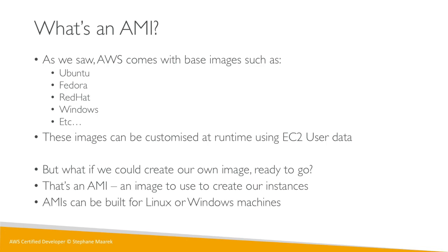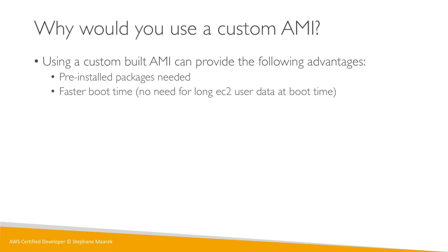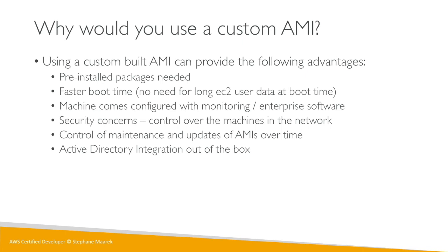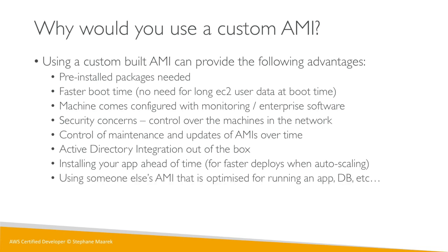A custom AMI is an image used to create your instances, and you can build them for Linux or Windows machines. Use cases include: pre-installing packages, faster boot time (no long EC2 user data scripts at boot), pre-configured monitoring or enterprise software, security controls over who can SSH into machines, maintenance and update control, Active Directory integration, pre-installing your application for faster deploys, or using someone else's AMI optimized for a specific workload. It's very common in large companies to maintain their own set of AMIs.